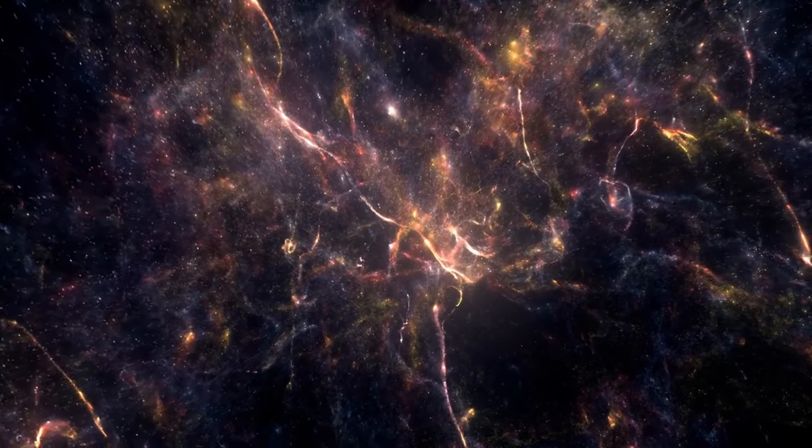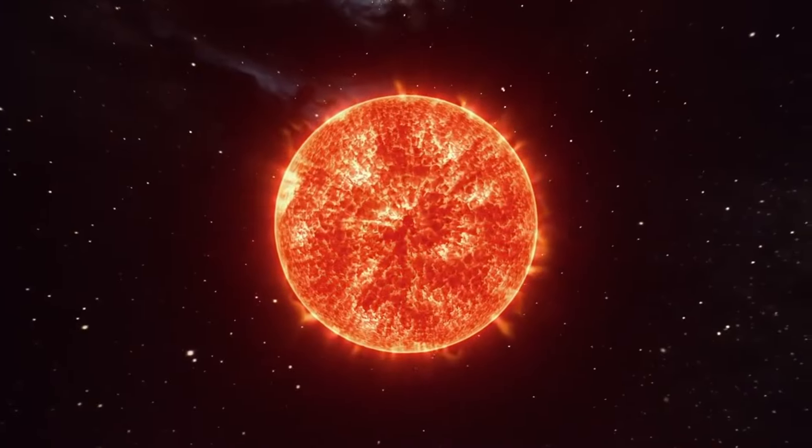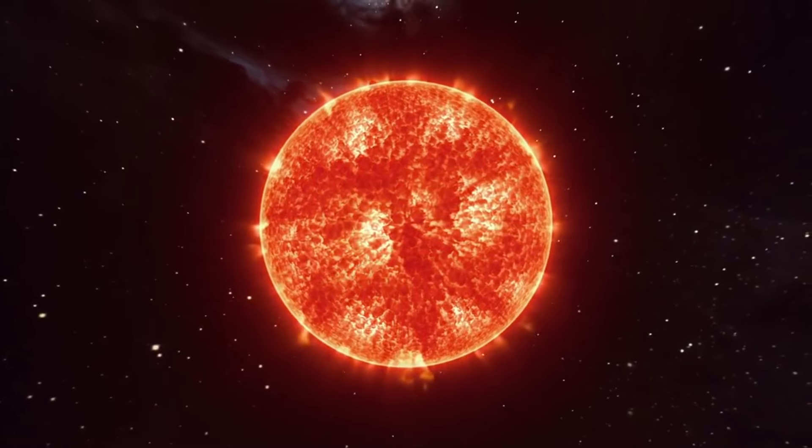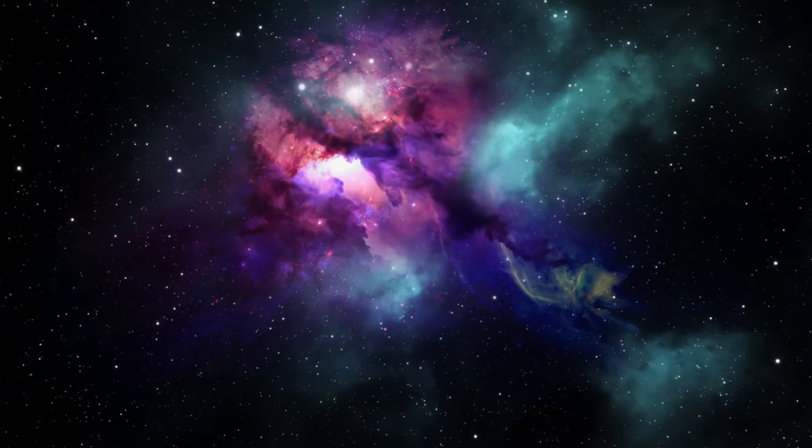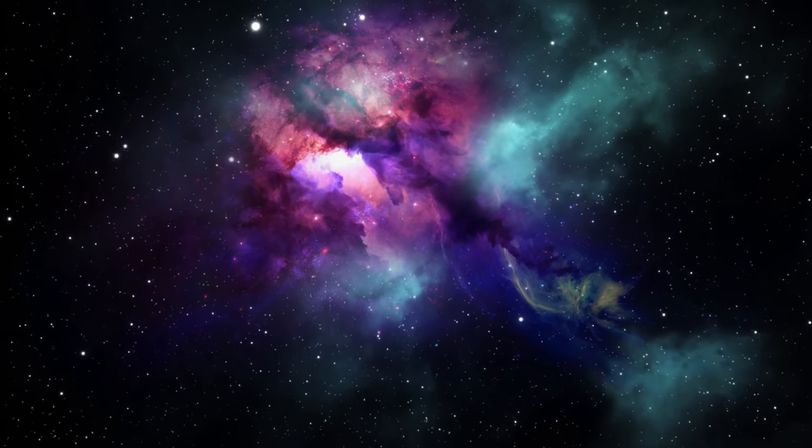Our sun is halfway through its main sequence phase. In about five billion years, it will become a red giant, eventually shedding its outer layers to form a planetary nebula, leaving behind a white dwarf.